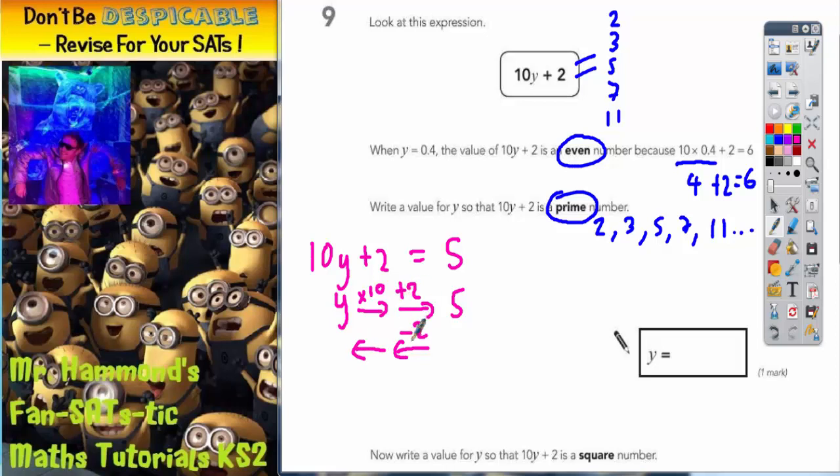So the opposite of add 2 is take 2. The opposite of times 10 is divide by 10. All we'd have to do now is work this backwards from the 5. 5 take 2 is 3, and 3 divided by 10 is 0.3. So that could be one answer for y. So y could be 0.3.